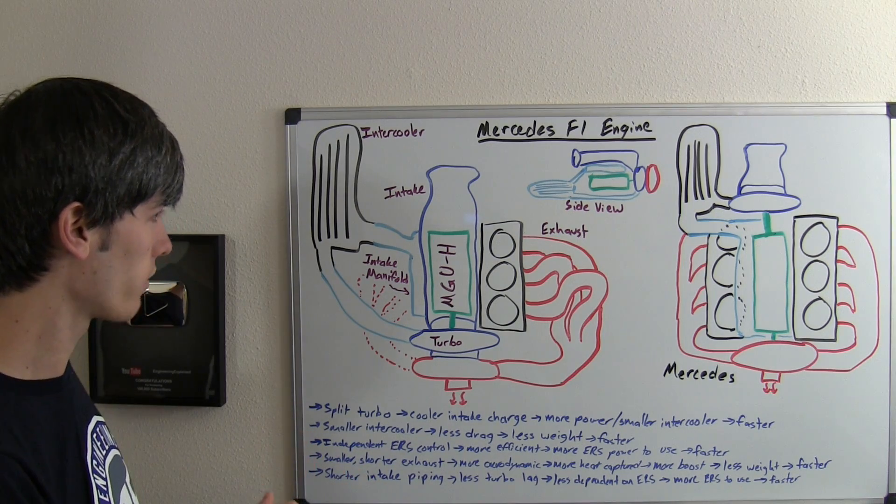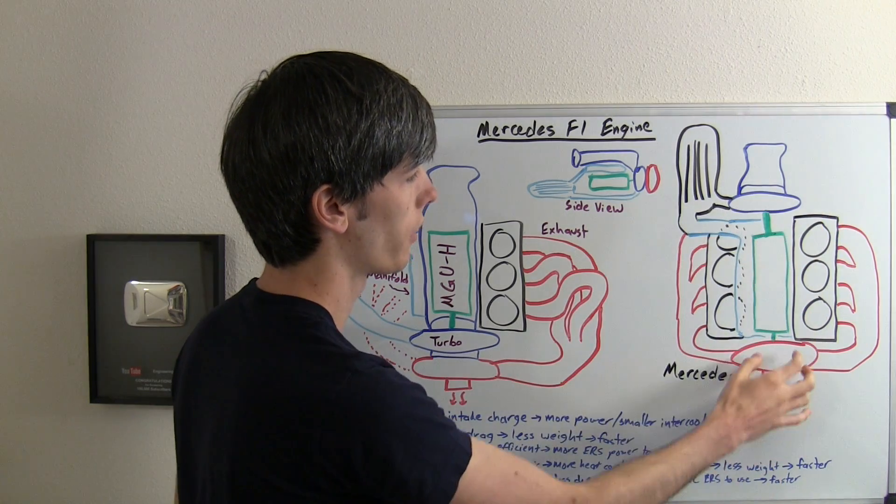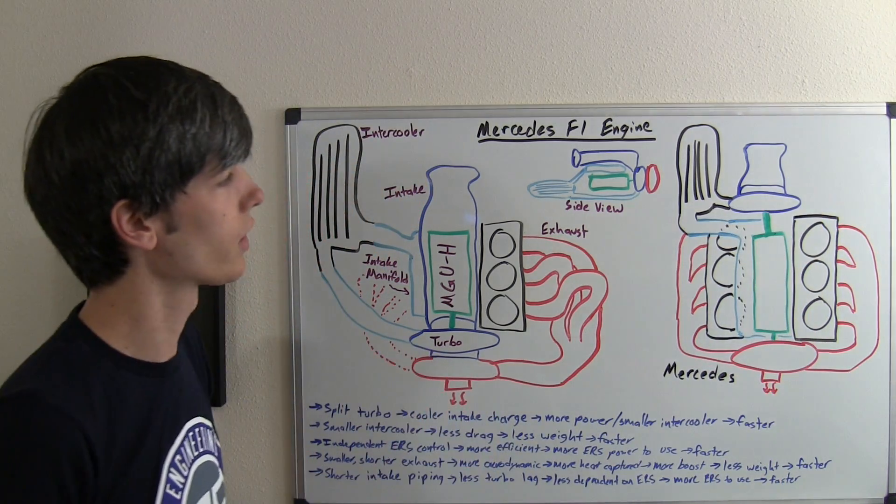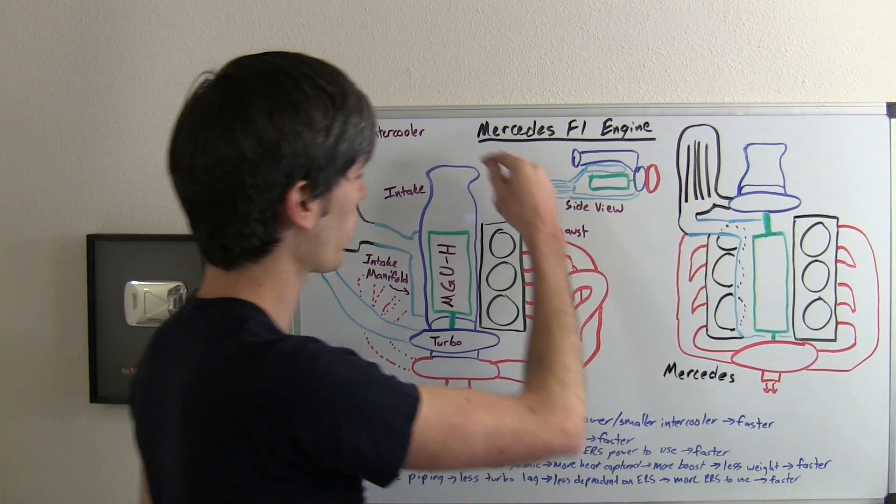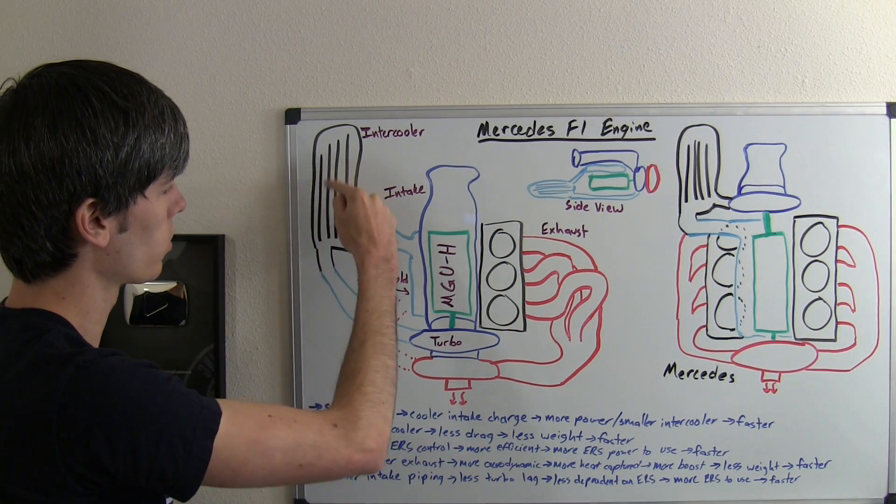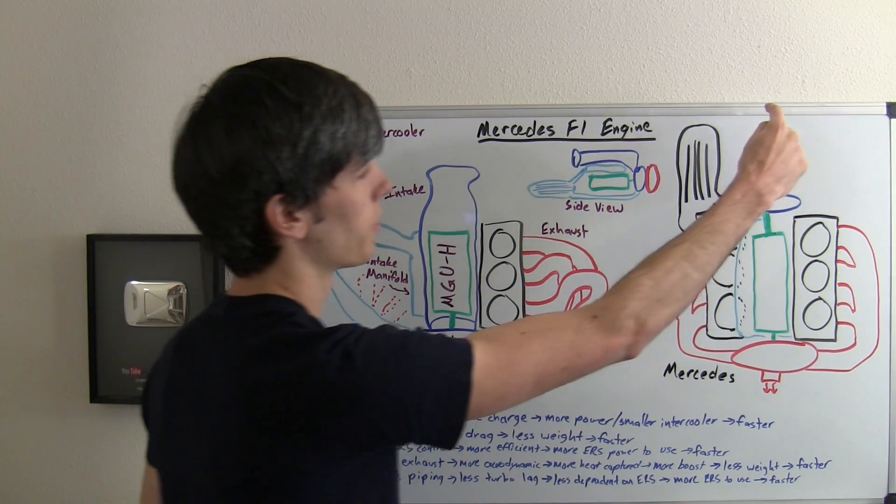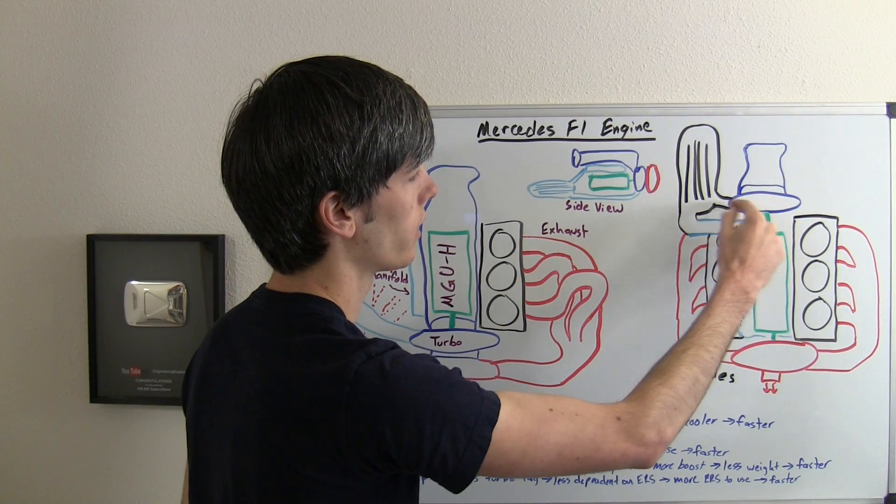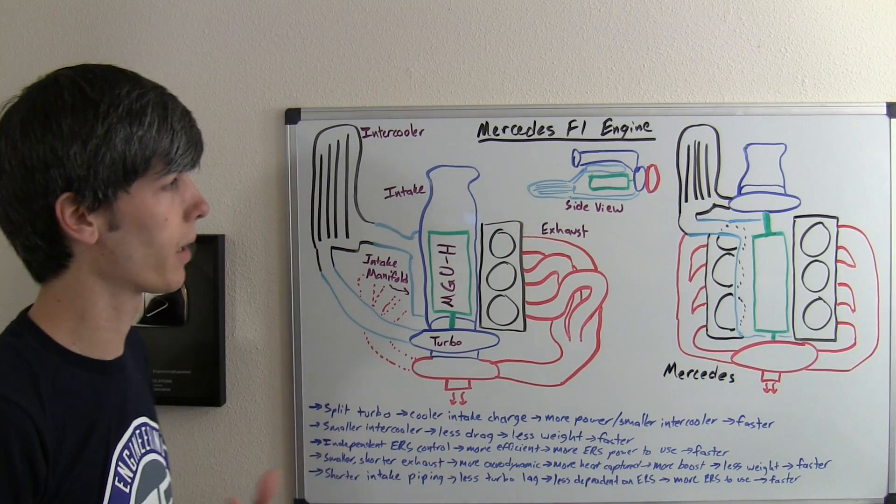The other thing they've done, by having this inlet portion of the turbocharger up towards the front rather than at the back, is you significantly decrease the amount of piping that the intake air has to travel through. Instead of traveling all the way back to the back of the engine, then back up to an intercooler and then back up towards the front and then into the intake manifold, it simply passes in right at the front into the intercooler and then right directly into the intake manifold.